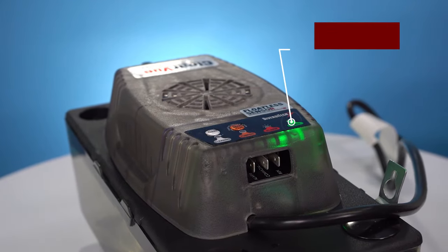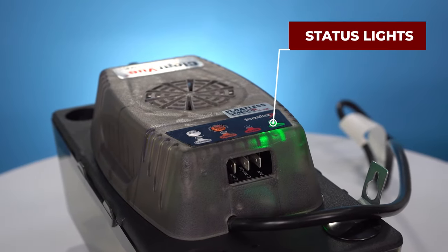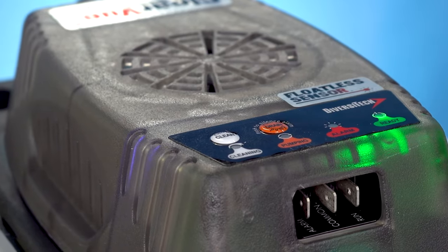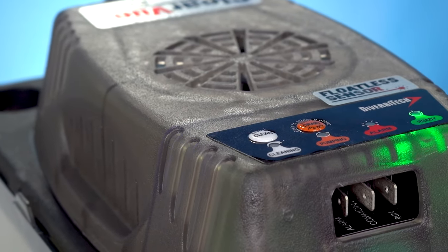The ClearView also features easy-to-read status lights, which can indicate whether the unit is working properly. A flashing blue light indicates that the floatless sensor is working properly.